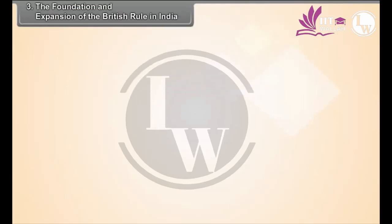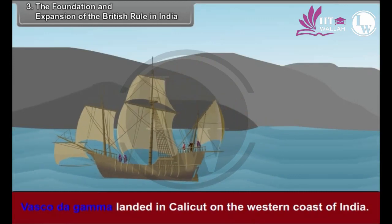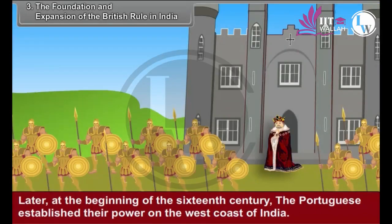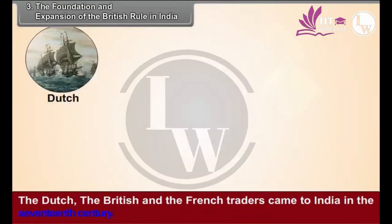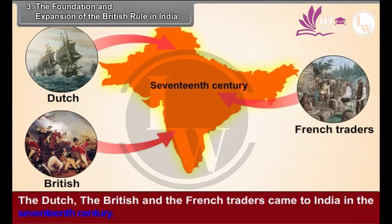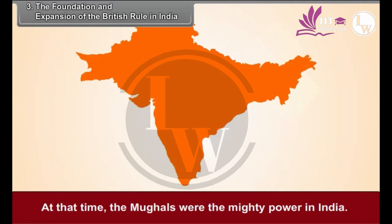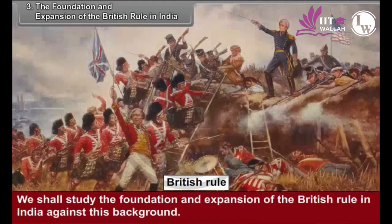Chapter 3: The Foundation and Expansion of the British Rule in India. Vasco da Gama landed in Calicut on the western coast of India. Later, at the beginning of the 16th century, the Portuguese established their power on the west coast of India. The Dutch, the British, and the French traders came to India in the 17th century. At that time, the Mughals were the mighty power in India. We shall study the foundation and expansion of the British rule in India against this background.